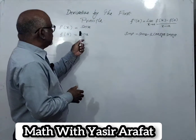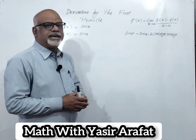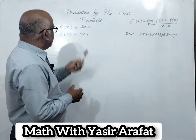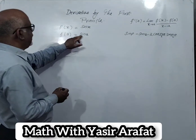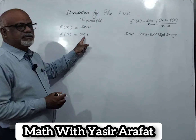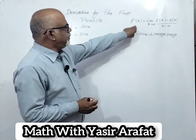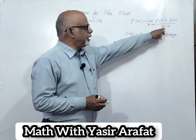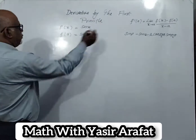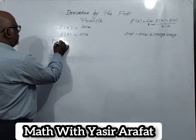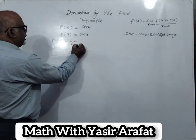Today we are going to discuss how to find out the derivative by using the first principle of trigonometric function. So here, f of x is equal to sin of x. We have the formula: f prime of a equals f of x minus f of a divided by x minus a, with the limit x tends to a. We have to use this formula for the first principle.